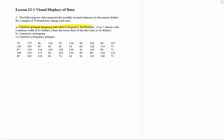They're giving us some guidelines. We're going to use seven classes with a uniform width of twenty dollars where the lower limit of the first class is forty dollars, and we want to then construct a histogram and a frequency polygon.